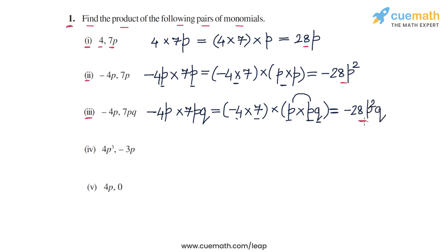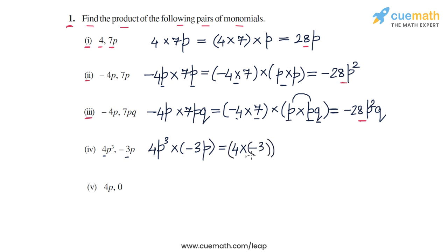This will be the product in the third part. In the fourth part, we have 4p cubed and minus 3p. So 4p cubed into minus 3p. We multiply the coefficients separately: 4 into minus 3. The variable parts are p cubed and p, so p cubed into p. So 4 into minus 3 is minus 12, and p cubed into p is p to the power 4. So we get minus 12p to the power 4. This is the product in part 4.